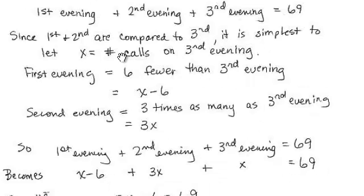So the first and second are being compared to the third, so I let X be the number of calls on the third evening. The first evening it says there were six fewer than on the third evening. Well, that means here's the third evening minus six. So six fewer than the third evening would be the third evening minus six.